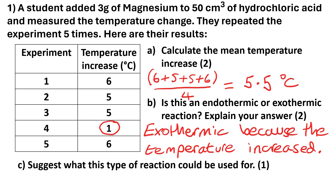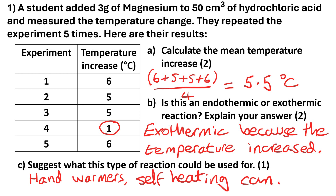Question C: suggest what this type of reaction could be used for. It's warming up the surroundings, so it could be used for hand warmers or a self-heating can with something like coffee inside.